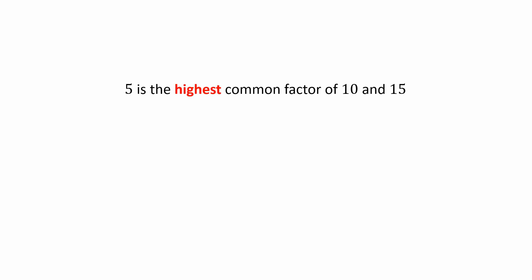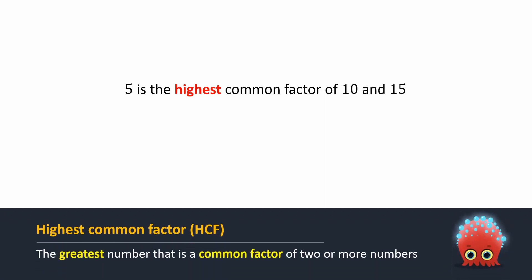Is five the highest factor of 10 and 15 that divides them exactly? Yes, five is the highest common factor of both numbers that divides them completely. In mathematics, the greatest number that is a common factor of two or more numbers is called the highest common factor, or HCF. It is also called the greatest common factor, or GCF.